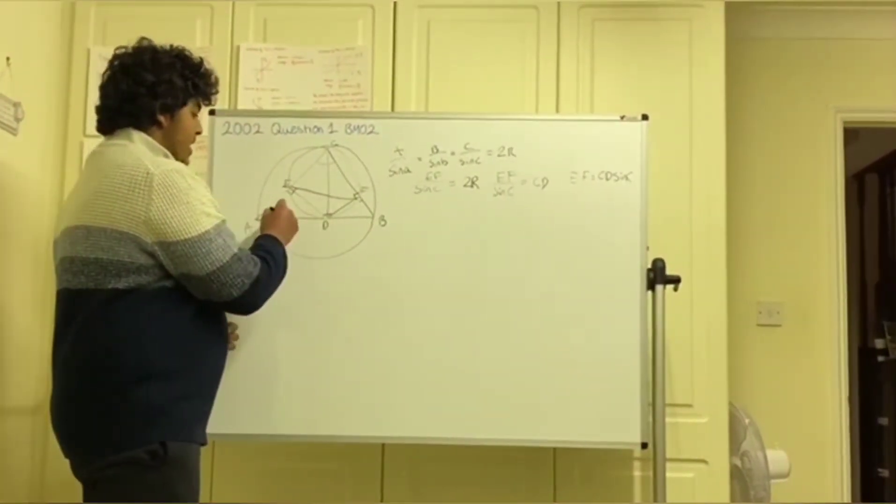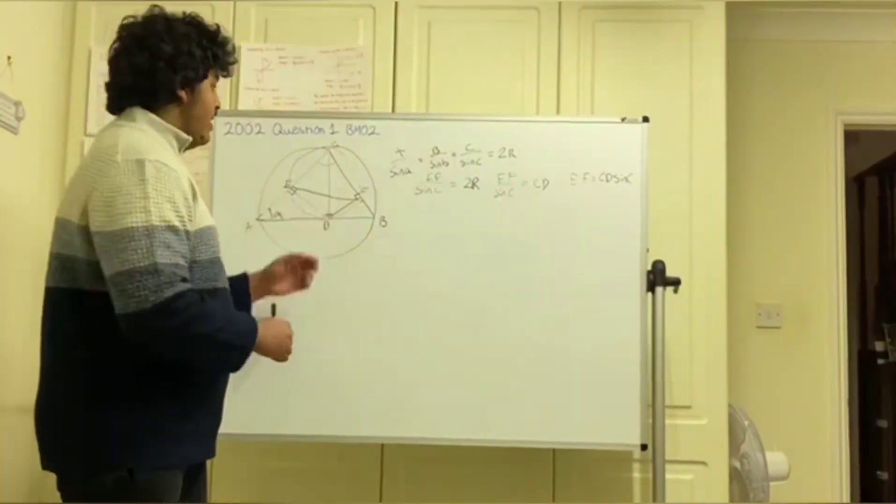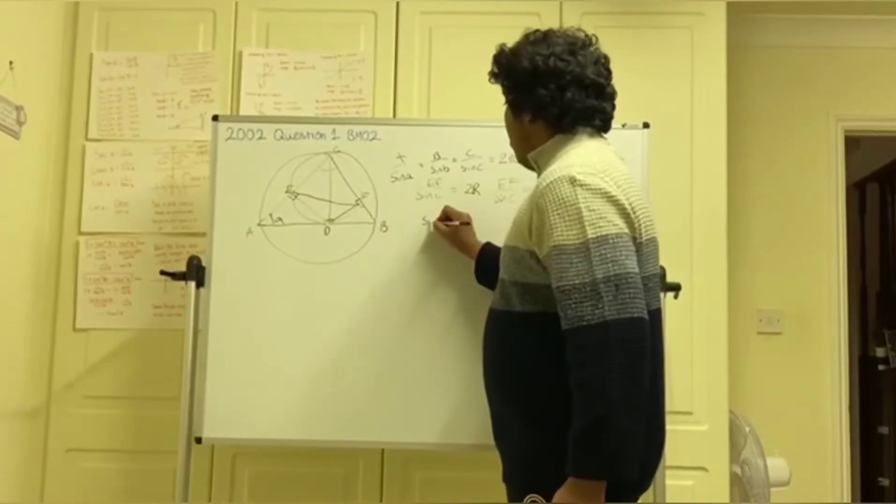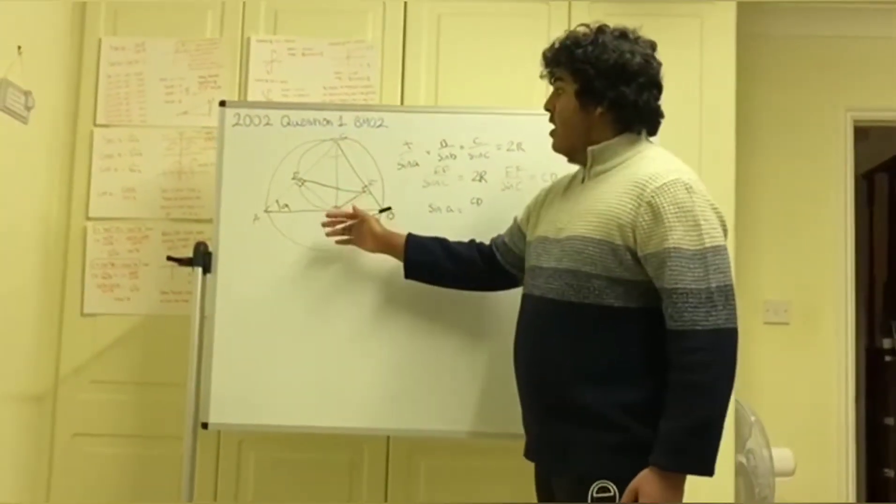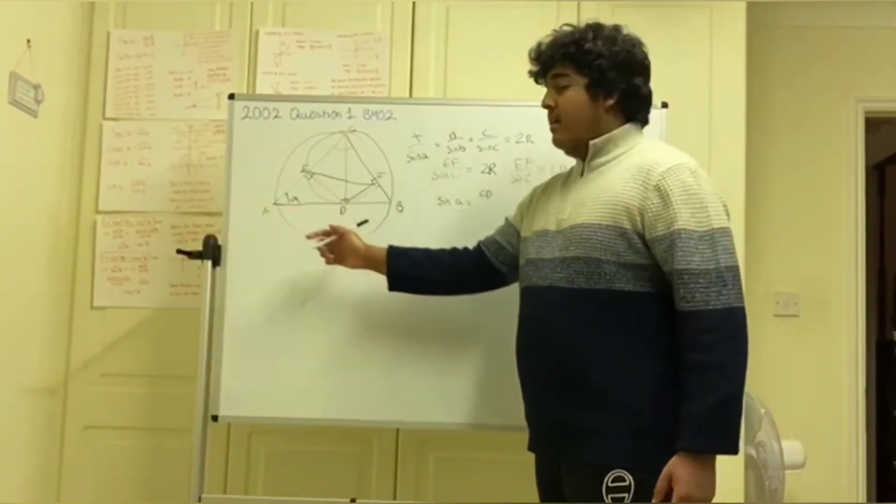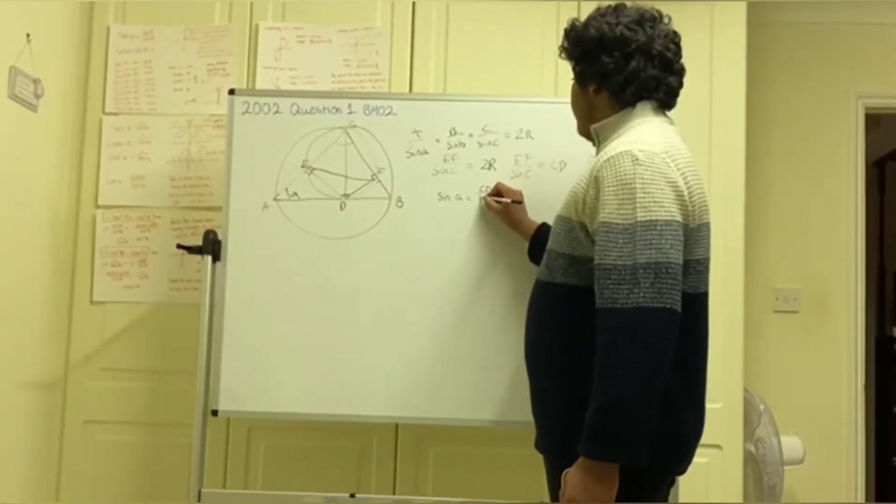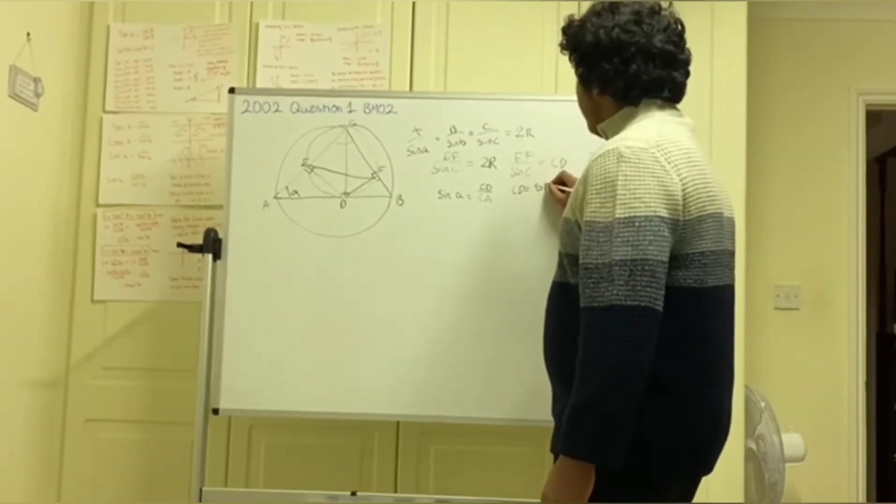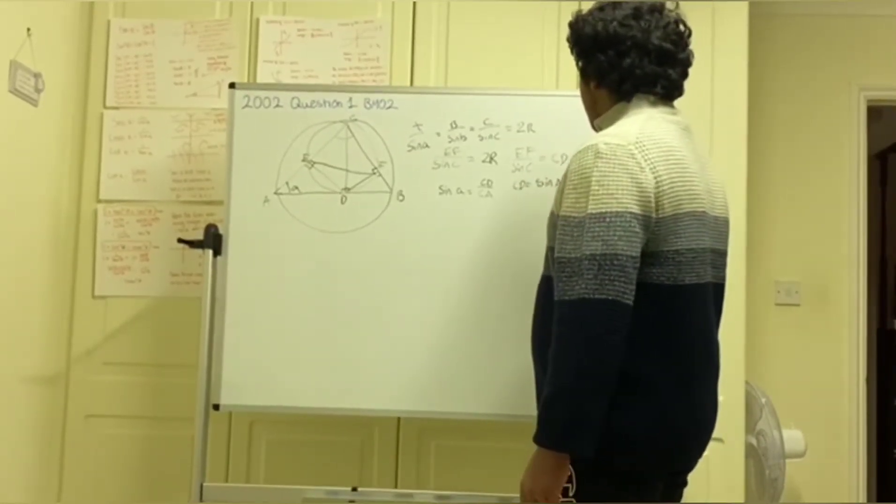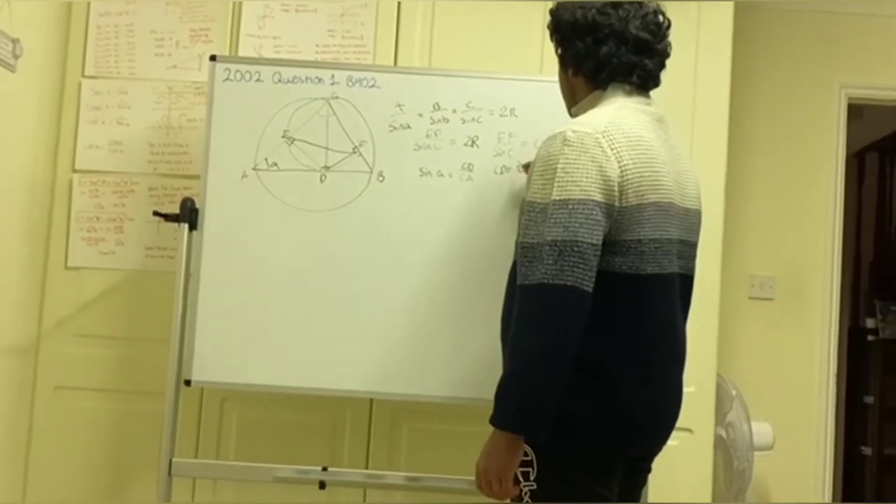We'll call this angle here A, which means that sin of A equals CD, which is the opposite side over the hypotenuse CA, which yields that CD equals sin A times CA.